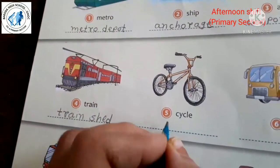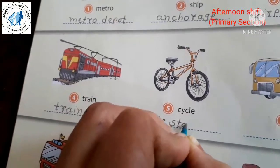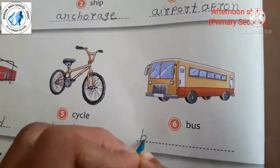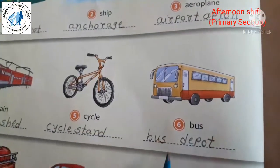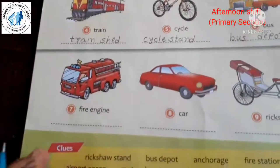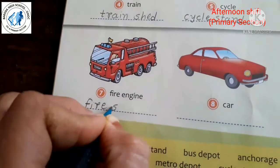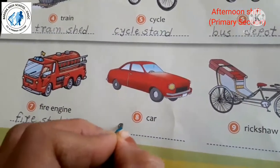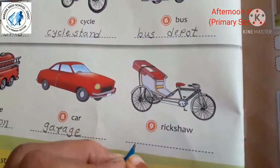The fifth vehicle is a cycle — write down 'cycle stand'. The sixth is a bus — write down 'bus depot'. Remember, in the word 'depot' the T is silent — metro depot, bus depot. The seventh is a fire engine — write down 'fire station'. The eighth is a car — write down 'garage'. The ninth is a rickshaw — write down 'rickshaw stand'.